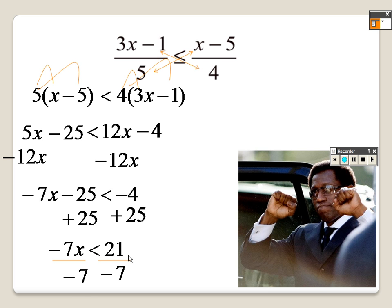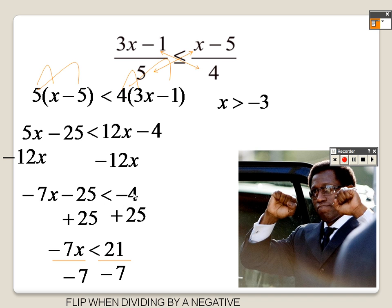Divided by a negative 7, which means I flip the sign when you divide by a negative, so I get x is greater than negative 3. Remember it's supposed to be greater than or equal to, so there should be a line underneath — so x is greater than or equal to negative 3. It's negative 3 as the lowest number, going from negative 3 to infinity. This should be a square bracket because there's a line underneath in the original problem, so there should be a square bracket right there at the negative 3.